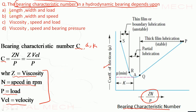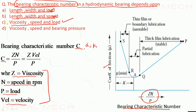Coming to the given options: length, width, and load — that is wrong. Length, width, and speed — that is also wrong. Viscosity, speed, and load — option C is the correct option. Option D, viscosity, speed, and bearing pressure — that is also wrong.